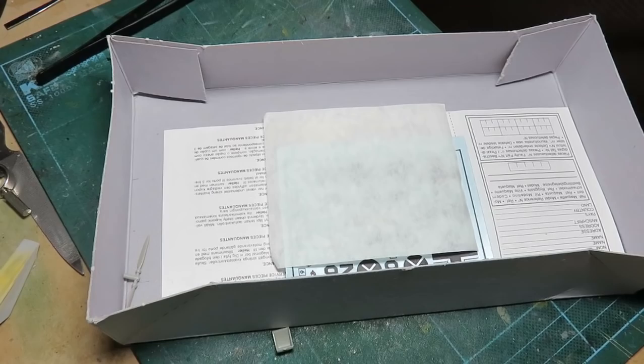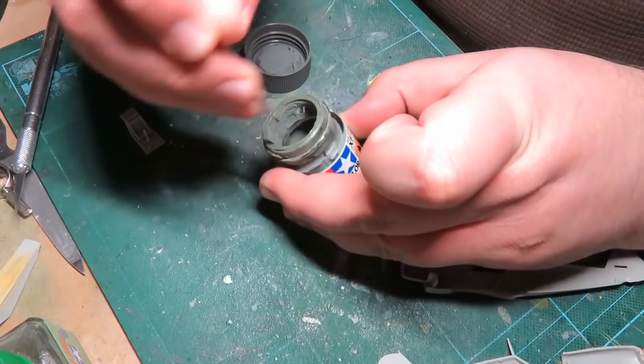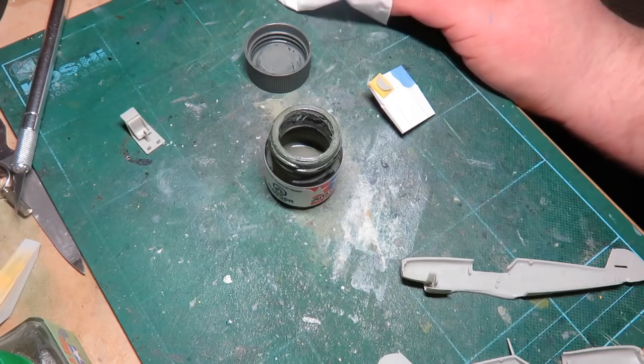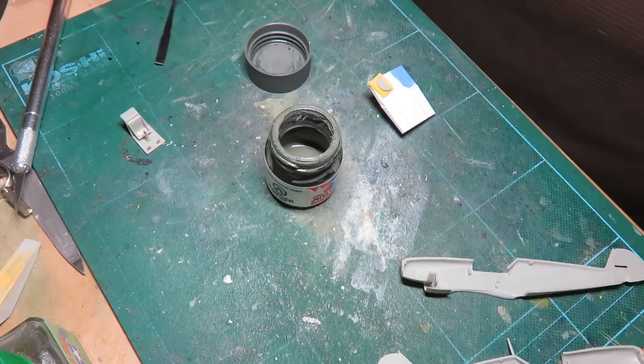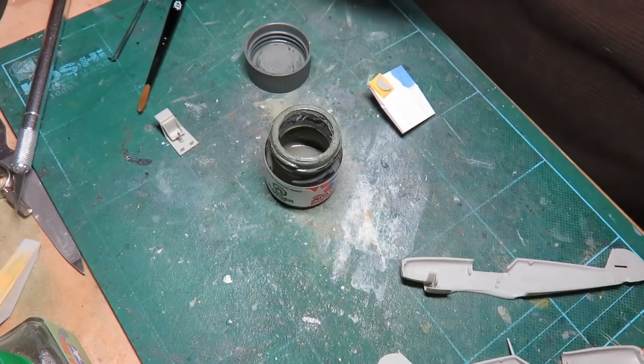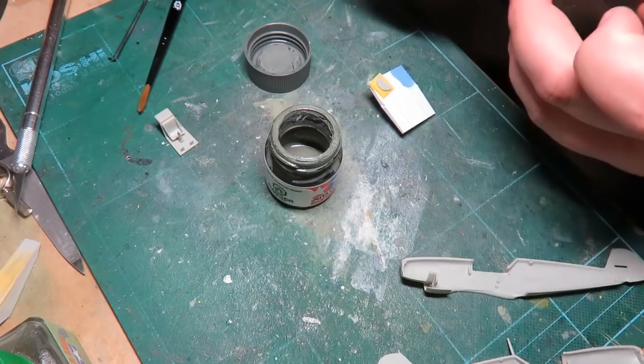I'm just going to use Tamiya RLM Gray XF22 for the interior. I don't quite care how accurate or not I'm being here because it's just the inside of the cockpit. Most people won't even see that. So I'm going to use a wide angle brush here and what I should probably do is I should probably make another one of those little swatches there.